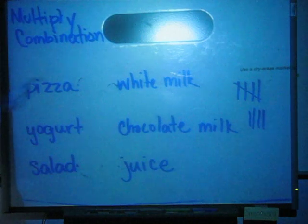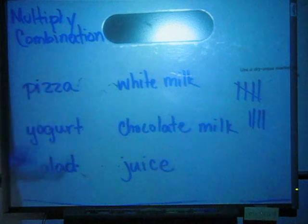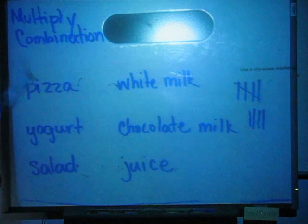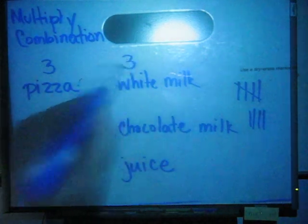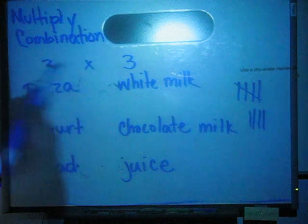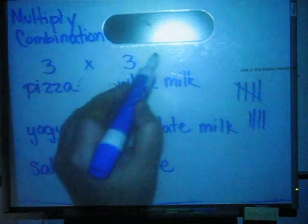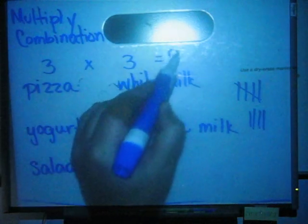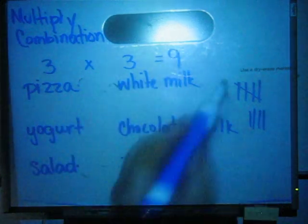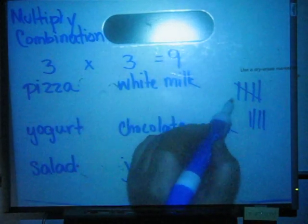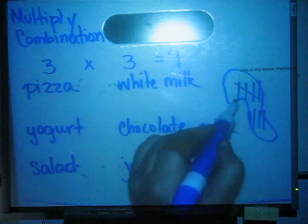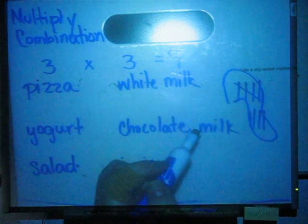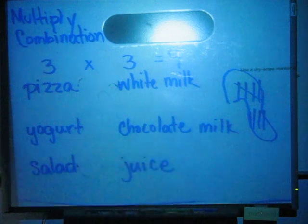The easiest way is to say: how many choices do I have for my meal? I have 3. How many choices do I have for my drink? 3. If I multiply 3 times 3, how many combinations can I come up with? 9. Isn't that the same as what we have over here? Yes, 9. So let's try another one.